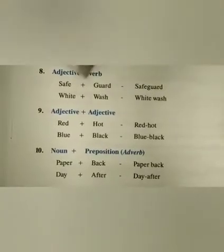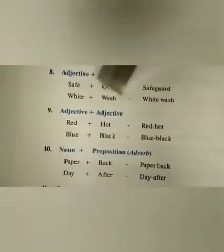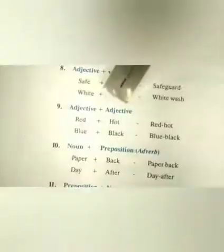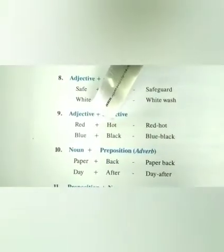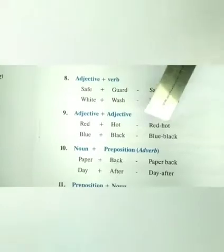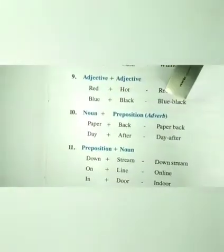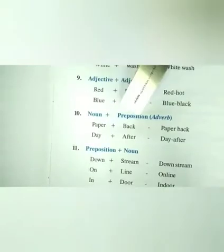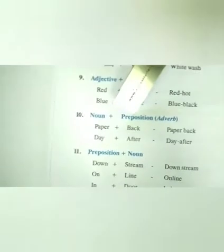Adjective plus verb compound words: 'safe' plus 'guard' gives 'safeguard'. 'White' plus 'wash' gives 'whitewash'. Adjective plus adjective compound words: 'red' plus 'card' gives 'red card'. 'Blue' plus 'black' gives 'blue black'.